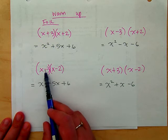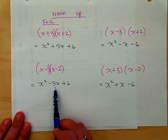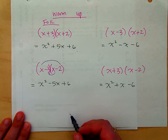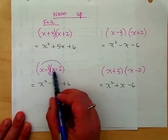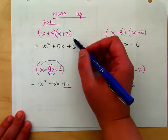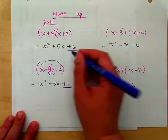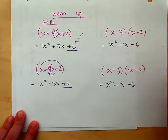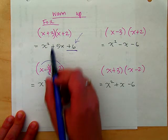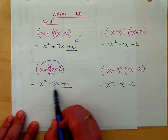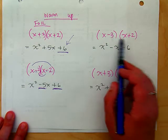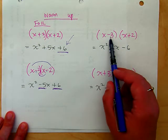If we look at the next one, we have a negative and a negative. Negative three plus negative two gives us the negative five coefficient, because those are the middle like terms — the outside and inside of FOIL. And because they're both negative, the last number has to be positive, since a negative times a negative is a positive. When the last digit is positive, the signs have to be the same.